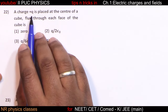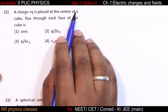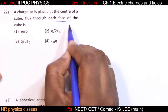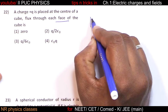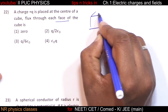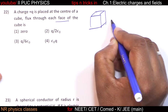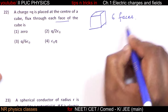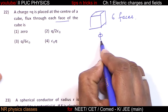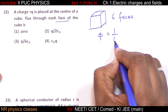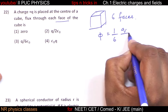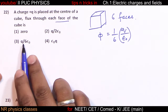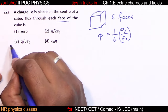A charge Q is placed at the center of a cube. A cube has six faces. Total flux = Q/epsilon naught. Flux through each face = one sixth of total = Q divided by 6 epsilon naught.